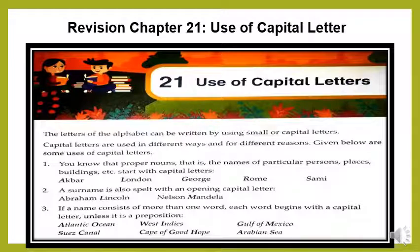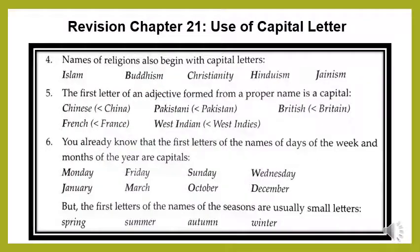Number 4. Names of religions also begin with capital letters. When you write the name of any religion, it always starts with a capital letter. For example: Islam, Buddhism, Christianity, Hinduism, Jainism. These are all names of religions and they are started with a capital letter. So remember that when you write the name of any religion, it always starts with a capital letter.